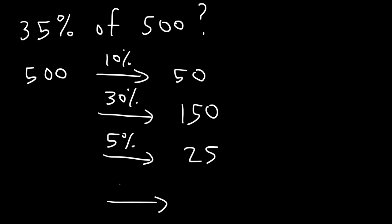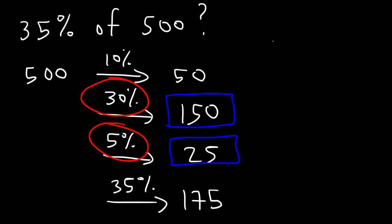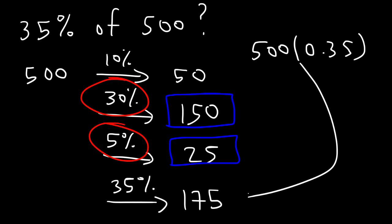Now to get 35%, all I need to do is add 30% and 5%. So I have to add 150 and 25, which gives me 175. Let's confirm the answer: 500 times 0.35 is 175. And it turns out that it is.